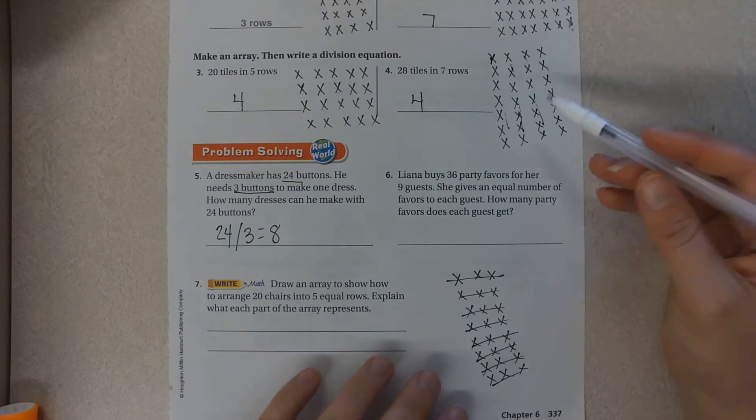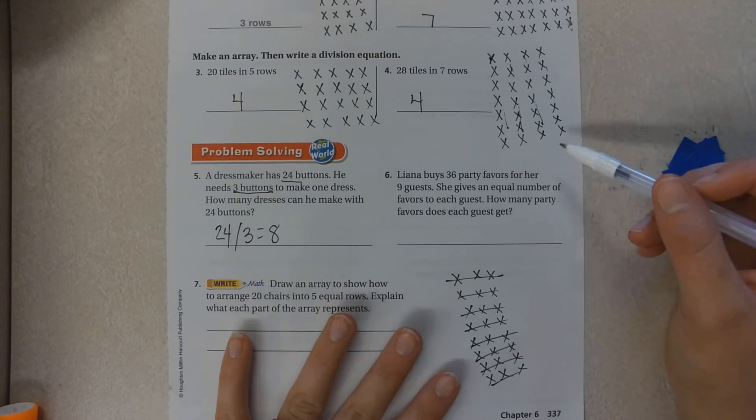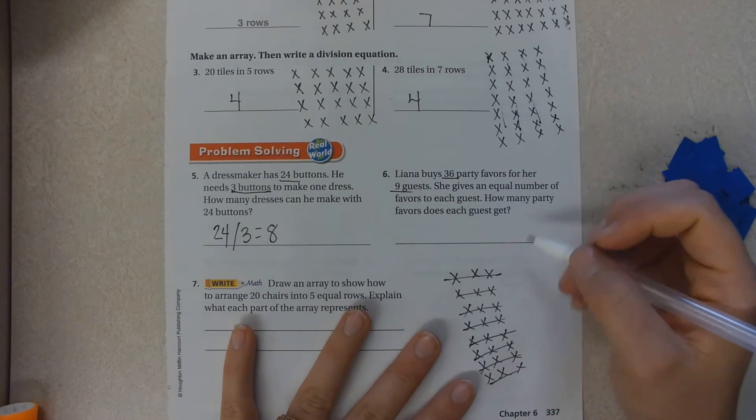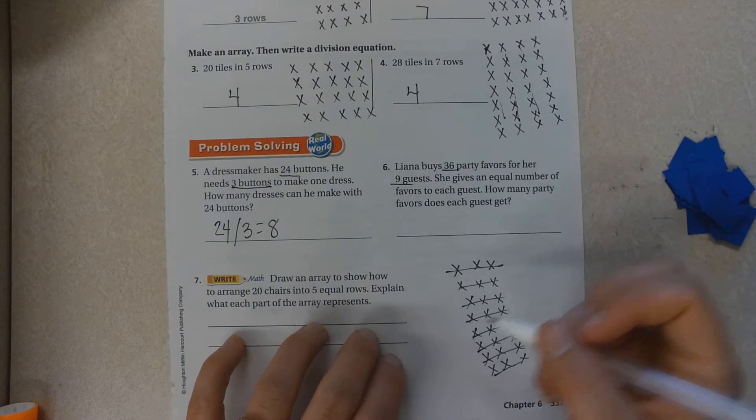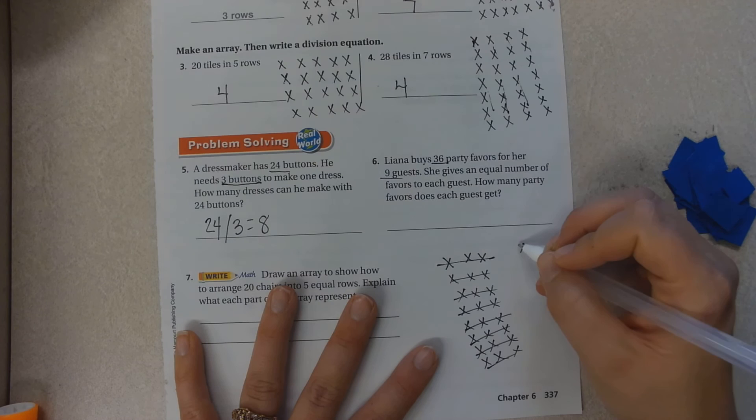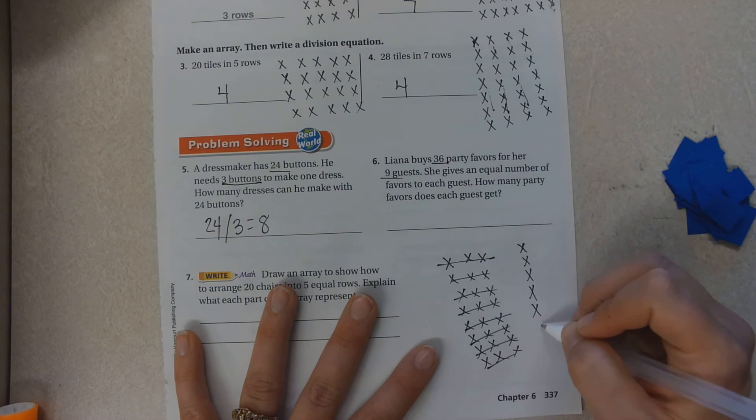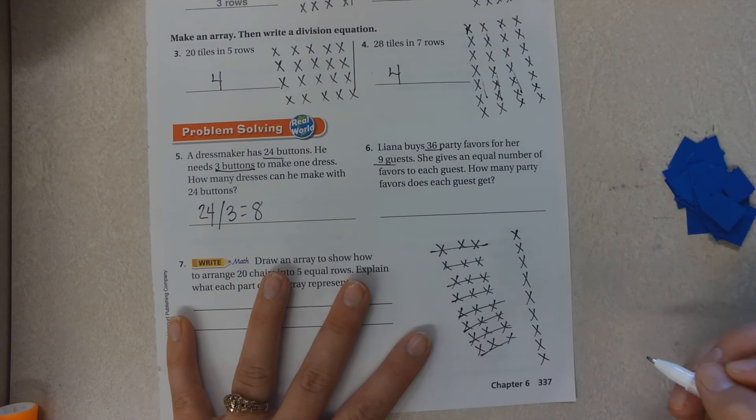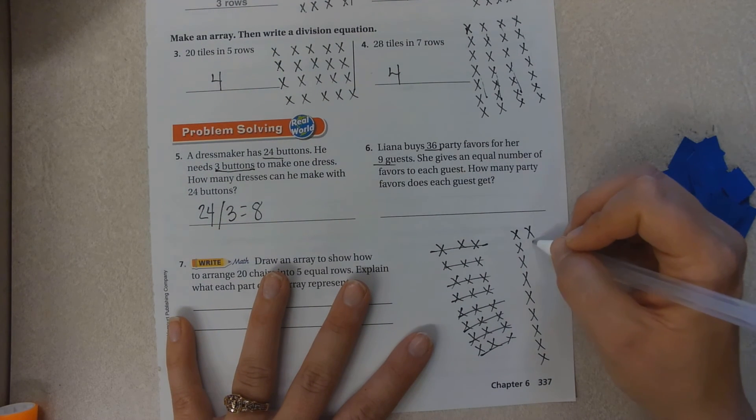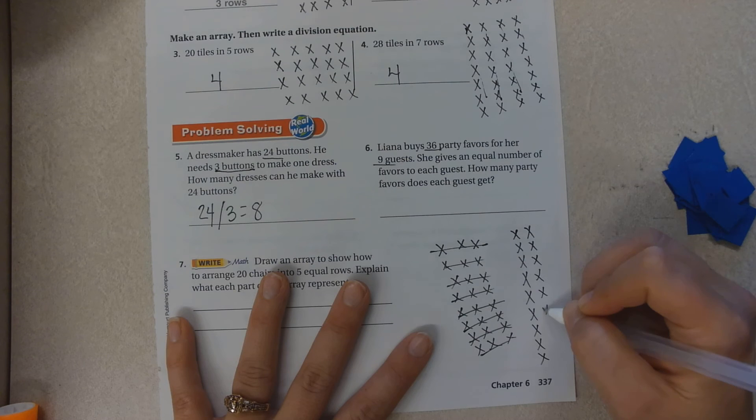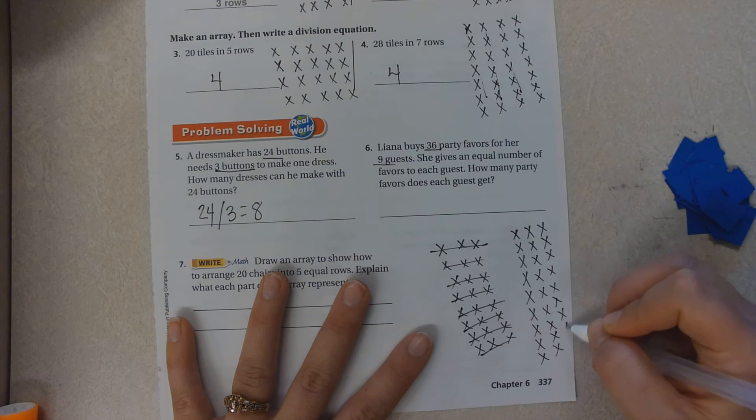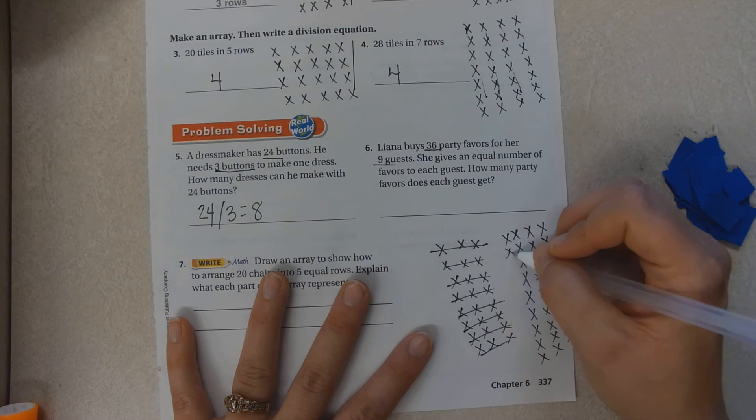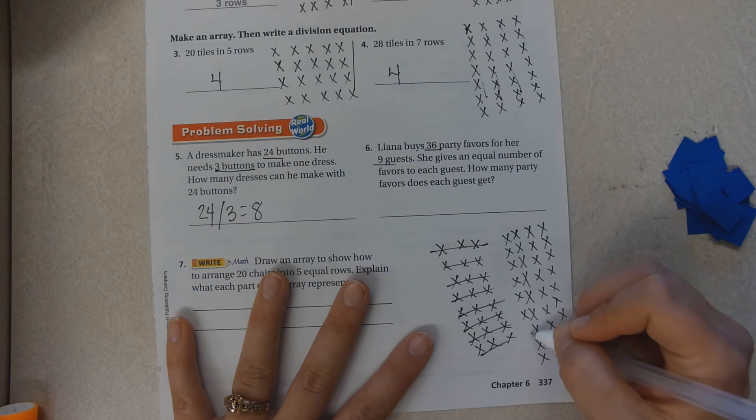Leanna has thirty-six party favors for her nine guests. I can do nine: one, two, three, four, five, six, seven, eight, nine, ten, eleven, twelve, thirteen, fourteen, fifteen, sixteen, seventeen, eighteen, nineteen, twenty, twenty-one, twenty-two, twenty-three, twenty-four, twenty-five, twenty-six, twenty-seven, twenty-eight, twenty-nine, thirty, thirty-one, thirty-two, thirty-three, thirty-four, thirty-five, thirty-six.